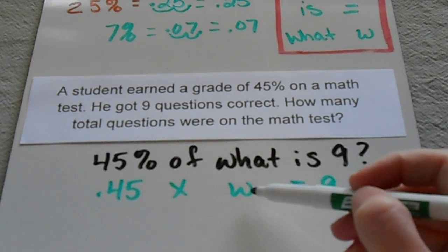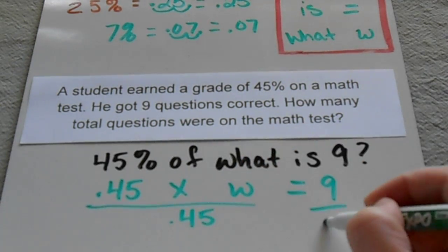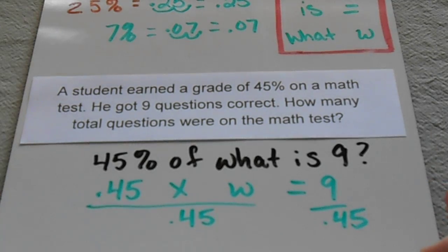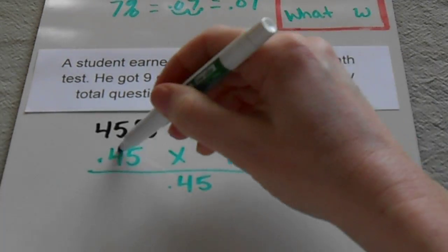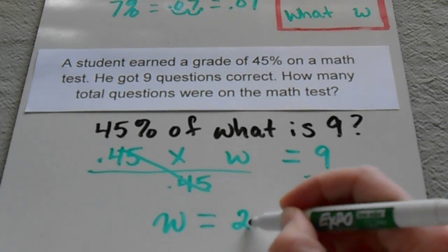Since I have the variable over here on this side, I'm going to divide by 0.45 on each side. When I divide, these two cancel out to give me w equals 20.